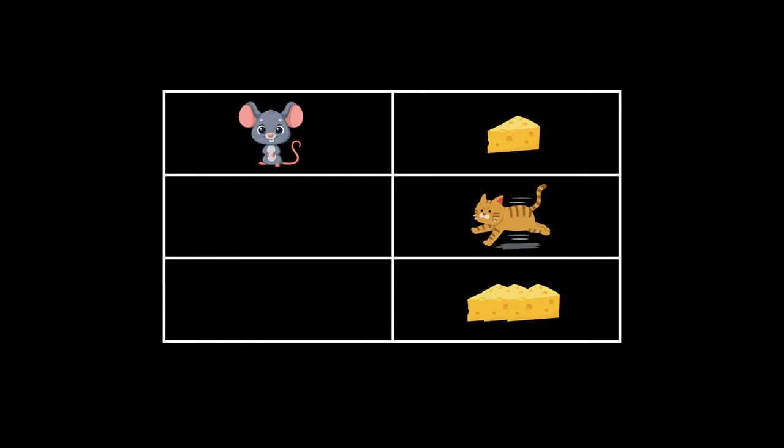If it moves to a state with one cheese, he gets +1. If he moves to the big cheese, he gets +10. If our cat Tom catches Jerry, then Jerry gets -10. The episode ends as soon as Jerry eats the big cheese or is caught by Tom.